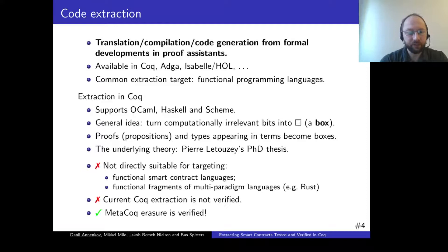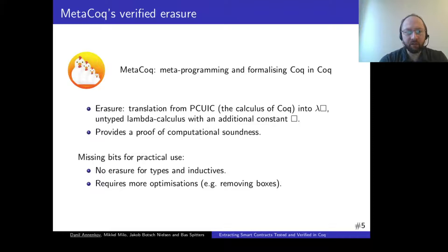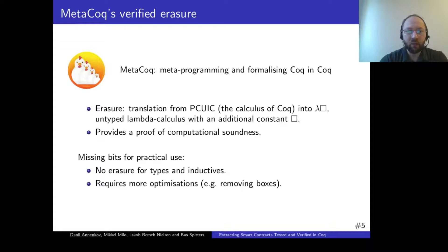The underlying theory of this transformation is developed in Letouzey's PhD thesis. Unfortunately, this is not directly suitable for us — it obviously does not support the targets we want, and also current Coq extraction is not verified. But luckily, the MetaCoq project features an erasure procedure that is verified. MetaCoq is a project that adds metaprogramming facilities for Coq and formalizes the metatheory of Coq. In this case, erasure is given as a translation from the metatheory of Coq — given by a flavor of the calculus of inductive constructions — into lambda-box, which is untyped lambda calculus with an additional constant box. The development also features a proof of computational soundness. However, there are certain missing bits for practical use, such as no erasure for types and inductive definitions for targeting typed programming languages, and we would like to have more optimizations.